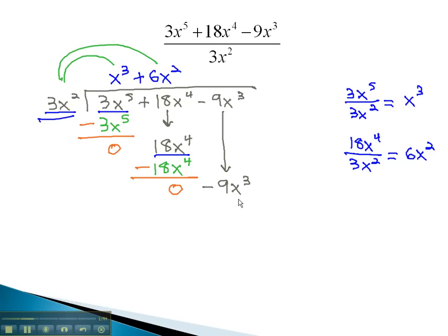Again, we repeat the process, so we can take the negative 9x cubed and divide by the 3x squared. When we do, this will simplify to negative 3x.